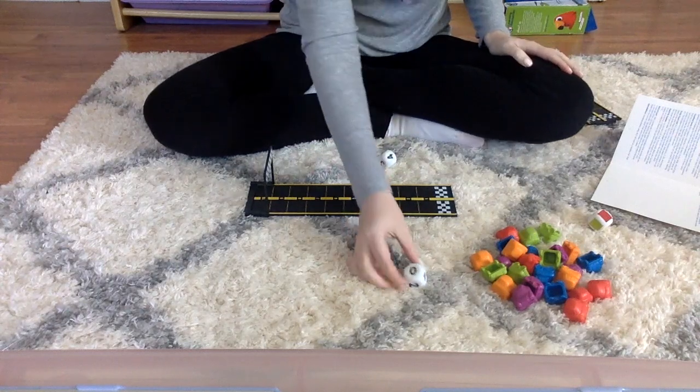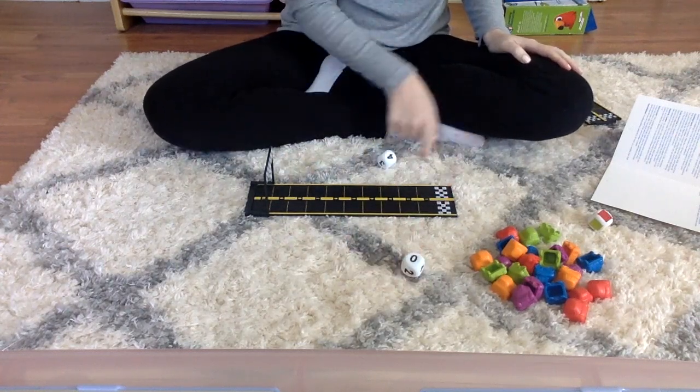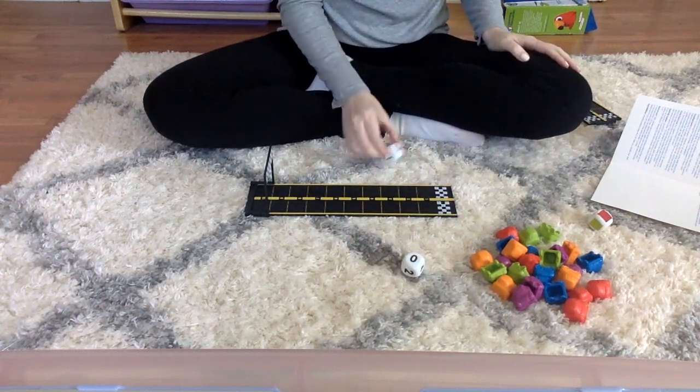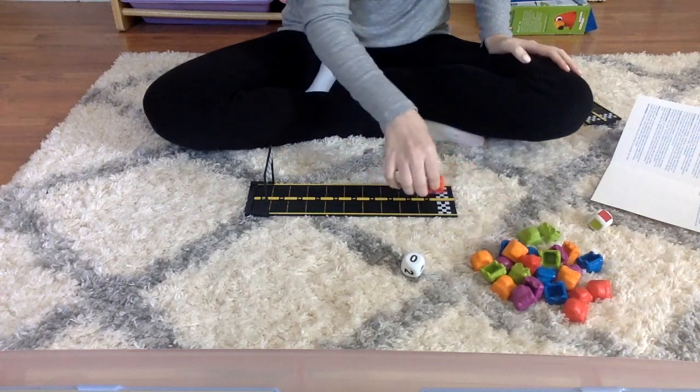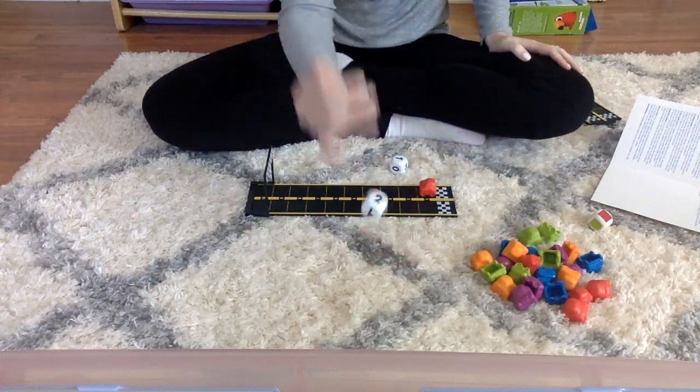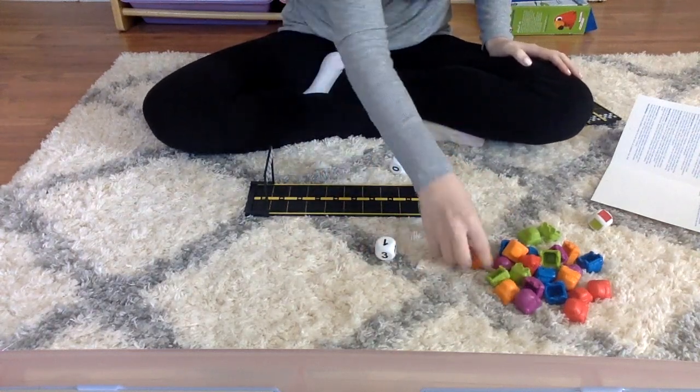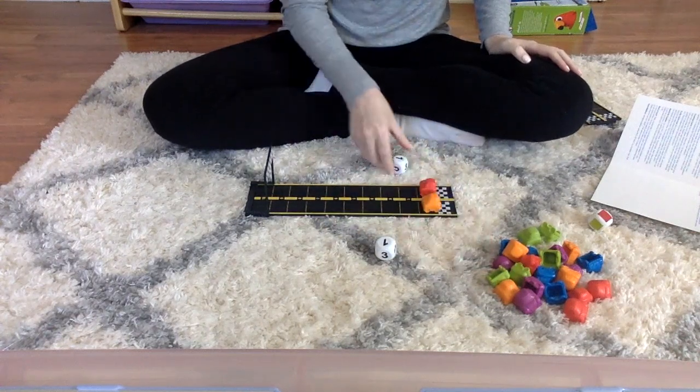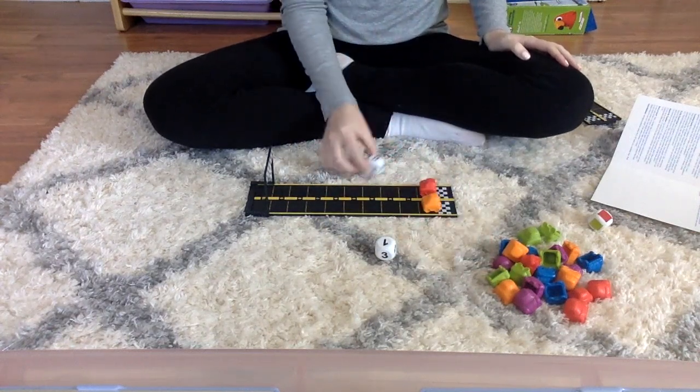I roll and get zero, so I can't do anything on this side yet. On the other side I roll one and add one car. Rolling again, this side gets one car, then this player rolls and gets zero.